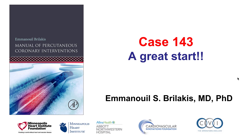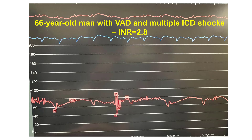This is Manos Perlakis and this is case 143 for the Manual of Percutaneous Coronary Interventions. This is a case that started in an interesting and stressful way. The patient was a gentleman with previous ventricular assist device placement who presented with multiple ICD shocks and was referred for coronary angiography. He did have an INR of 2.8, and this is the arterial pressure waveform which is fairly flat, but he has a Heartmate VAD.